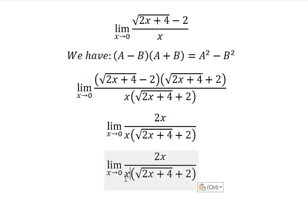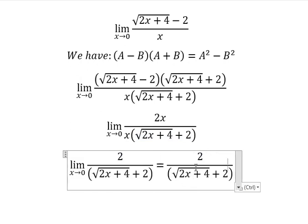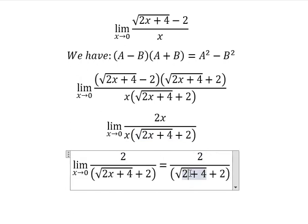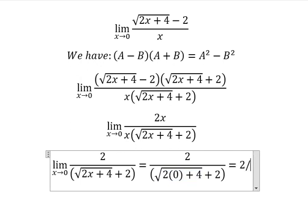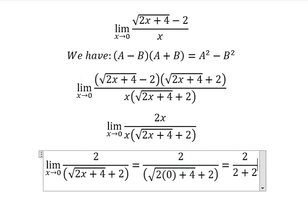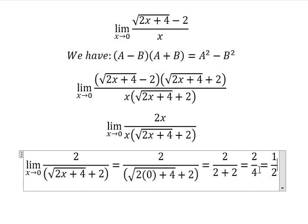We can simplify, so we put x equals zero in here and we have the final answer. So that means we have two over two plus two, which is two over four, and we have...